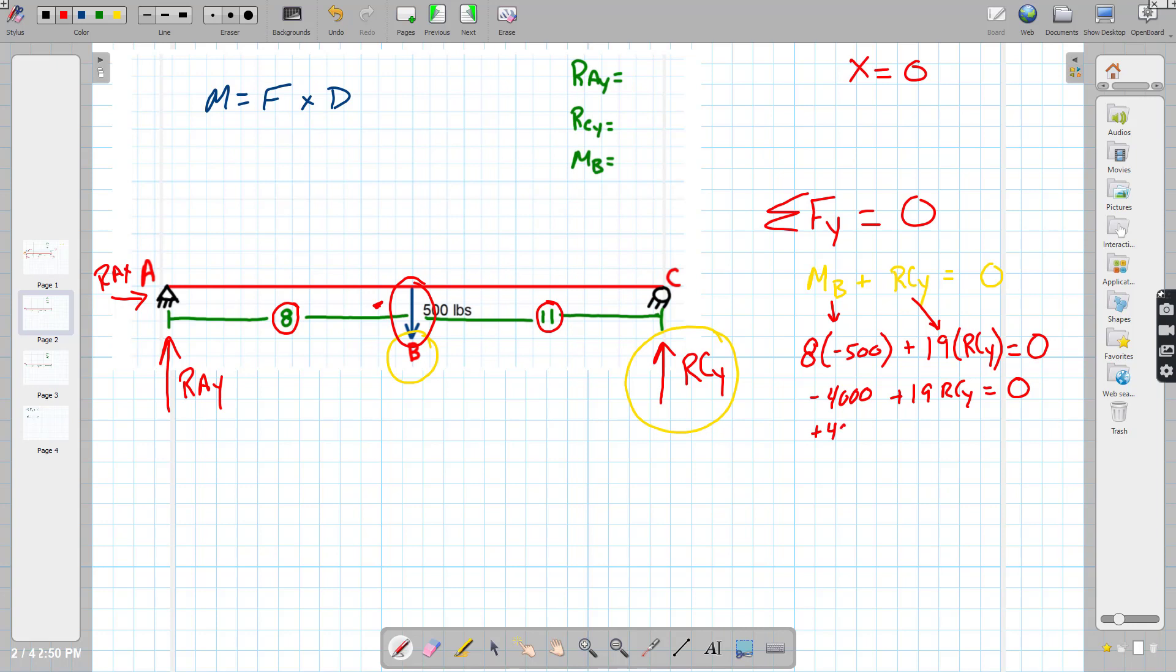So I'll add the 4,000 to both sides. So I end up with 19 R-C-Y equals 4,000. All right? So then from here, it's really a basic calculation, right? We are going to take 4,000 and we're going to plug it in our calculator. And basically, we're just going to divide it by 19. So we'll say 4,000 divided by 19. And R-C-Y is 210.526.